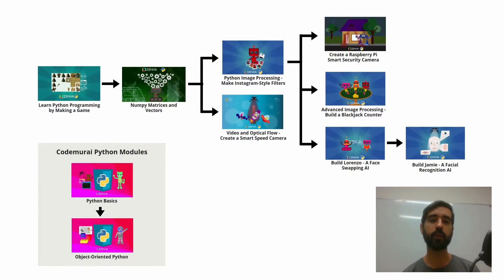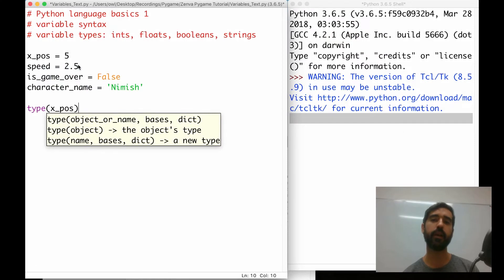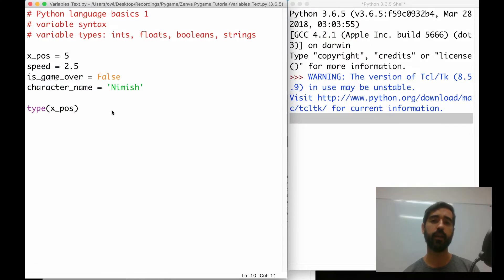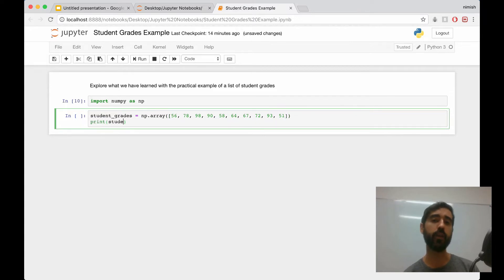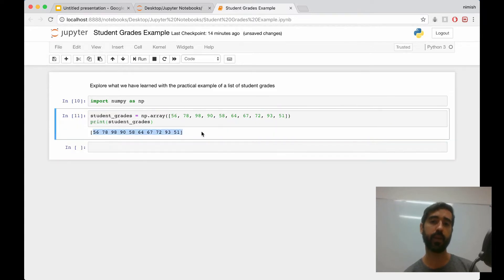Now the curriculum you are seeing on the screen is a map of how the different courses connect to each other. You can download this as a PDF by the way. It starts with teaching you how to code in Python and how to use the numpy library, which allows you to work with matrices and data — that will be very useful for the upcoming modules.